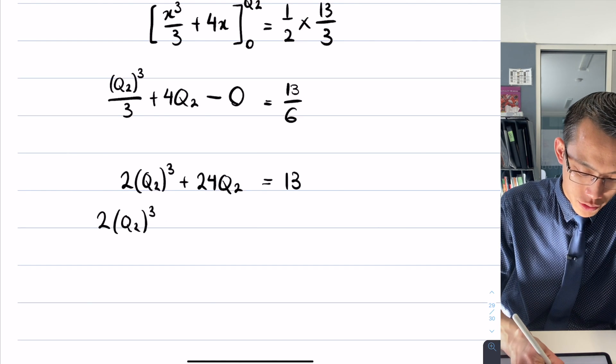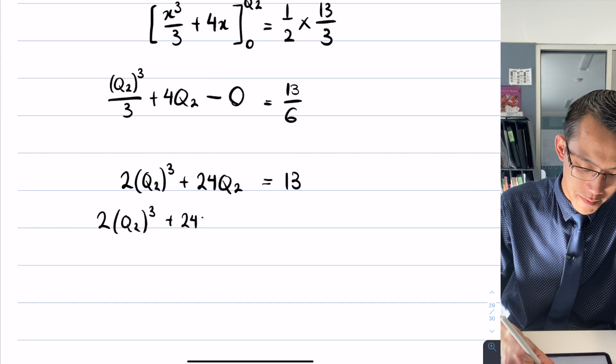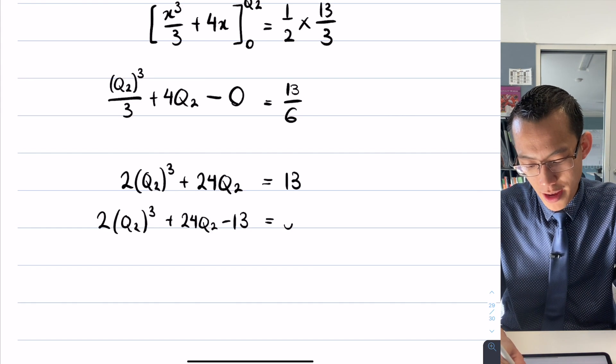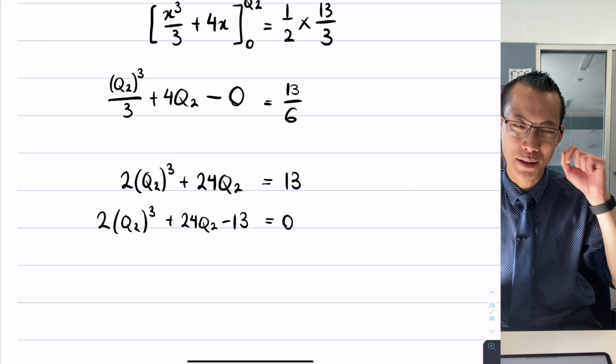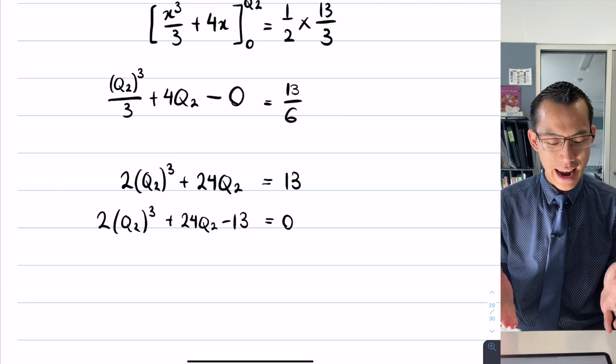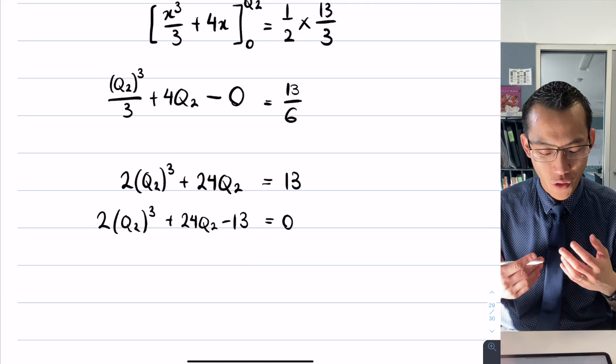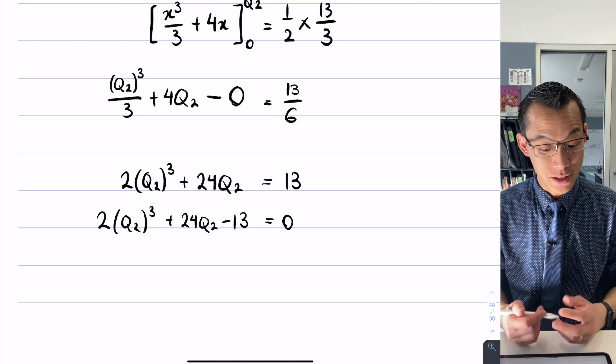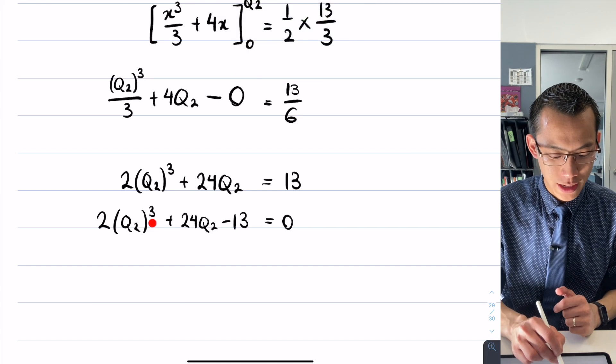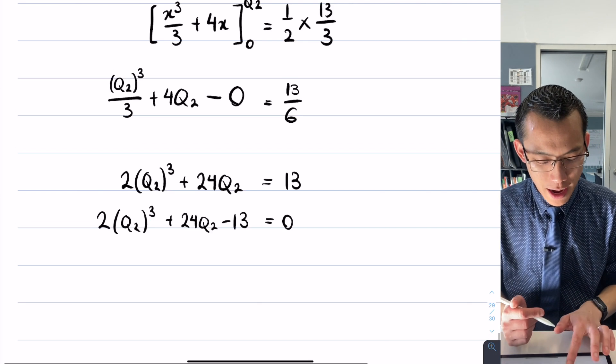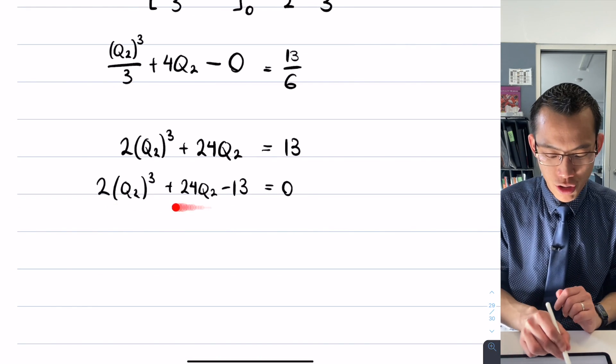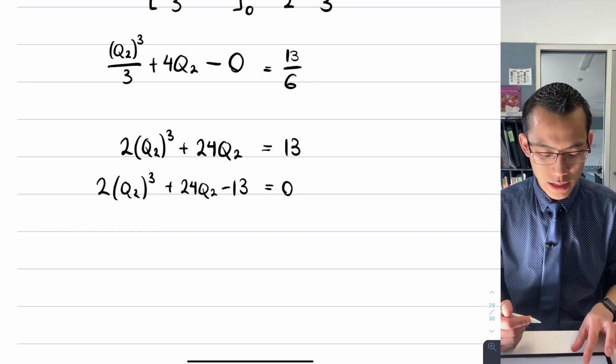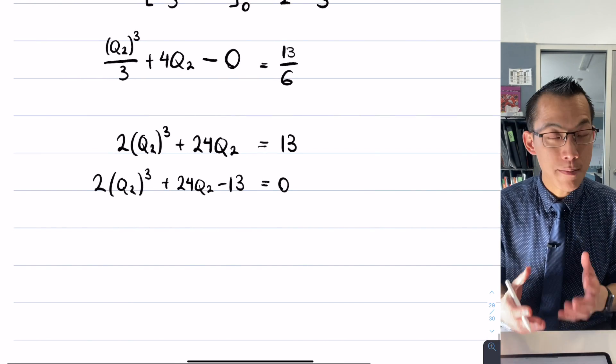This leaves me with this equation, and what I'm trying to do is make Q2, the median, the subject. Except I've kind of run into a snag because I've created and generated an equation I can't solve, at least not by hand. It's not a quadratic—you can see the power here is 3—so I can't use the quadratic formula on it.